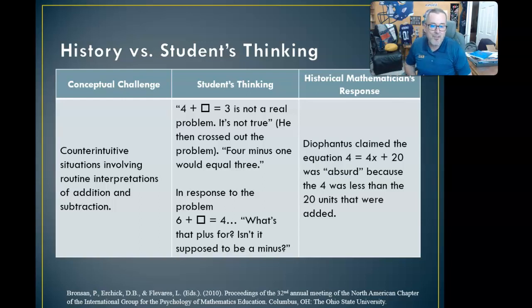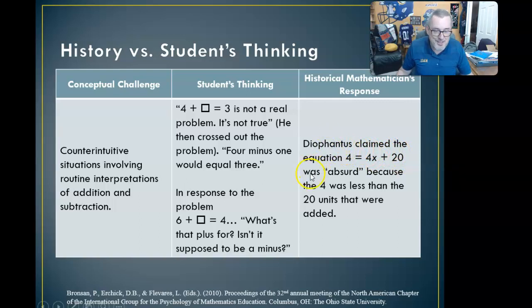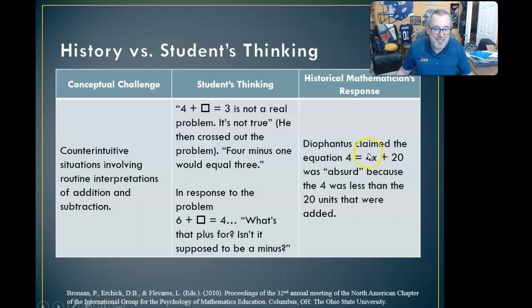Diophantus, a famous mathematician, claimed that the equation 4 equals 4x plus 20 was absurd. Take a minute and make sense of this equation: 4 times an unknown quantity, add 20, and get 4. How could you add 20 to an unknown quantity and get 4? Diophantus says that's absurd because the 4 was less than the 20 units added. We might know now that 4 times negative 4 is negative 16, and negative 16 plus 20 is 4 — so we can solve this equation. But historically, having a negative quantity, adding 20, and getting something less than 20 was considered absurd.